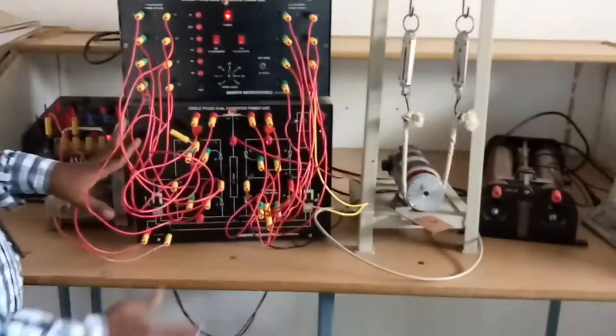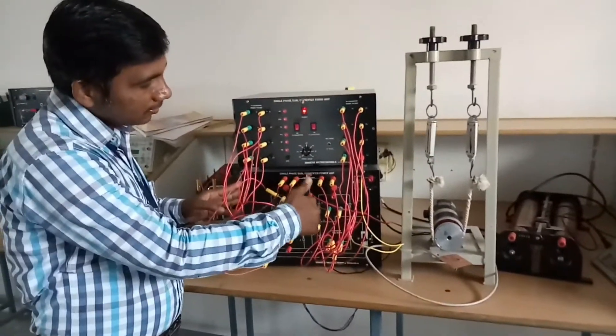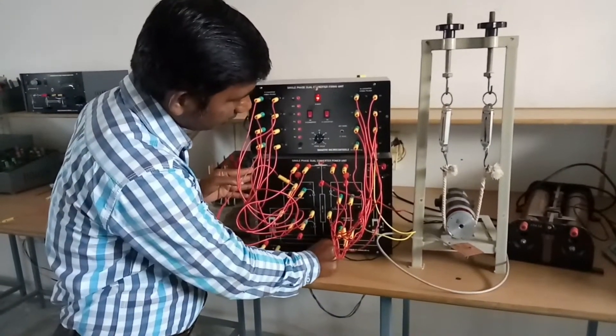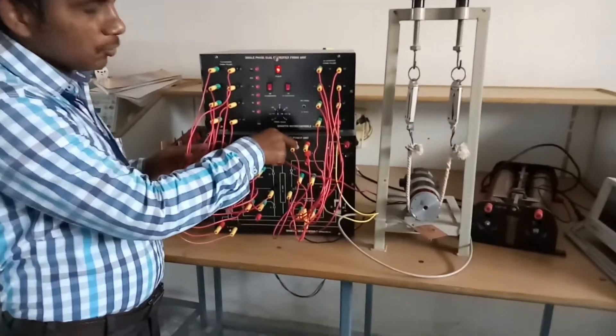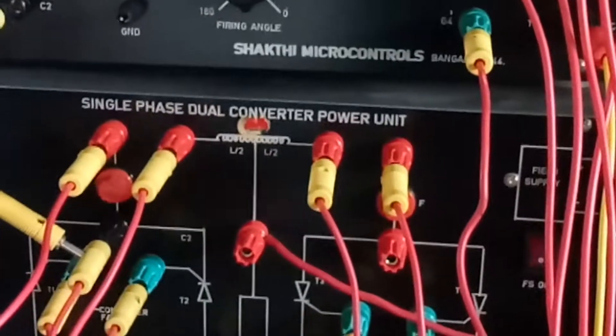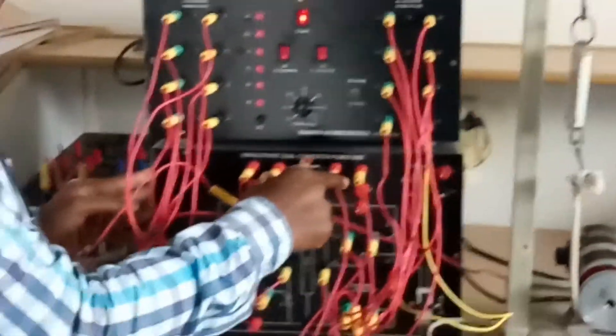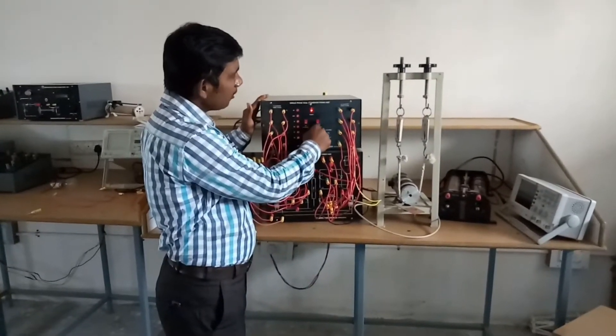These two converters we are connecting anti-parallel, and in between that we are connecting the load. This is the smoothing reactor. Smoothing reactors are used to eliminate harmonics. And this is P converter and N converter.